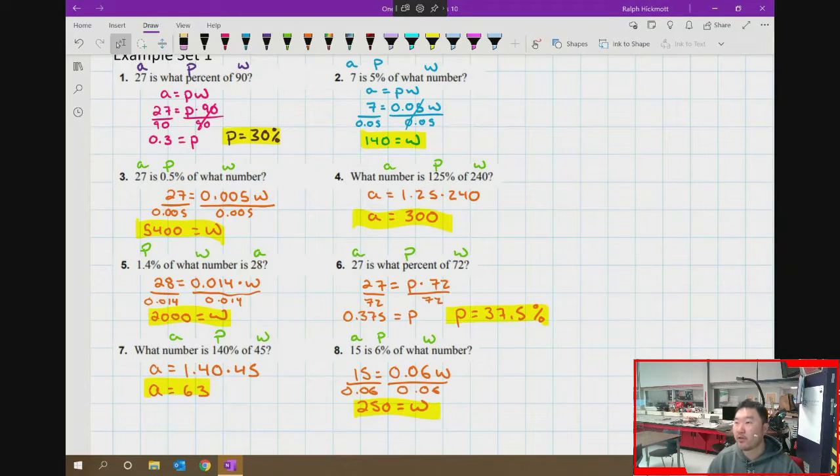What you should see is the answers pop up on your screen at this point. Double check three through eight based on your results and my answer key up here.